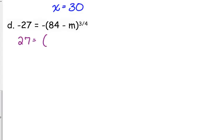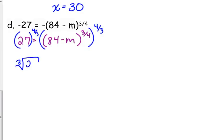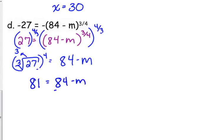When we do that, we get 27 is equal to 84 minus m to the three-over-fourth. Raise both sides to the reciprocal power, raise it to the four-thirds power. So that is the cube root of 27 to the fourth is equal to 84 minus m. The cube root of 27 is 3. 3 to the fourth is 81. Subtract 84 from both sides. Negative 3 is equal to negative m. Be careful with that. So positive 3 is equal to m.